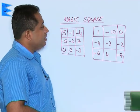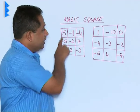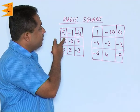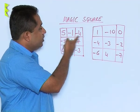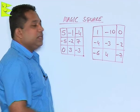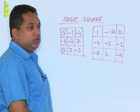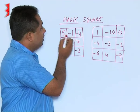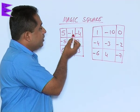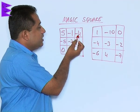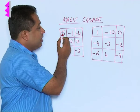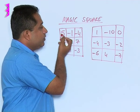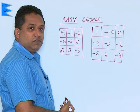Now let us examine whether the first one is a magic square or not. We see the first row here: 5, minus 1 and minus 4. When you add this, we find that minus 4 and minus 1 gives us minus 5, and 5 minus 5 gives us 0. So the first row gives us a total of 0.